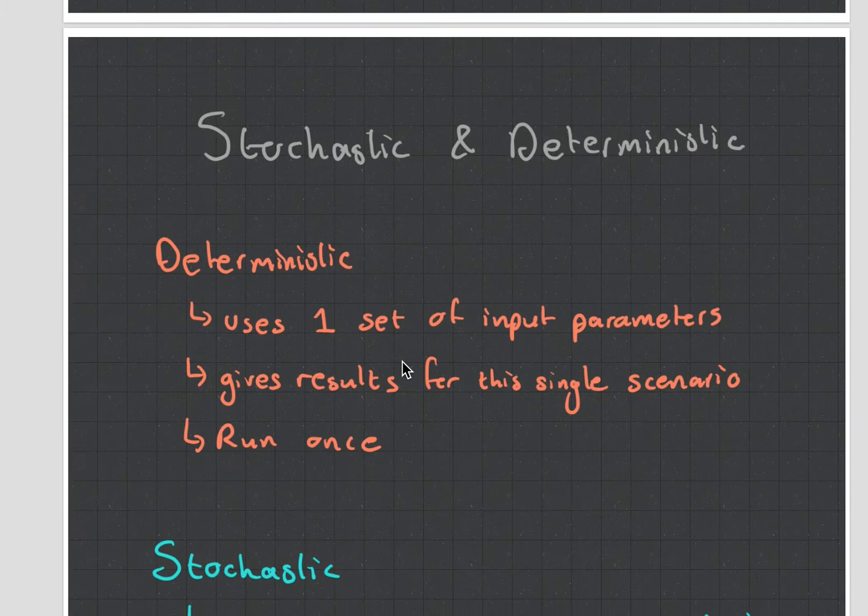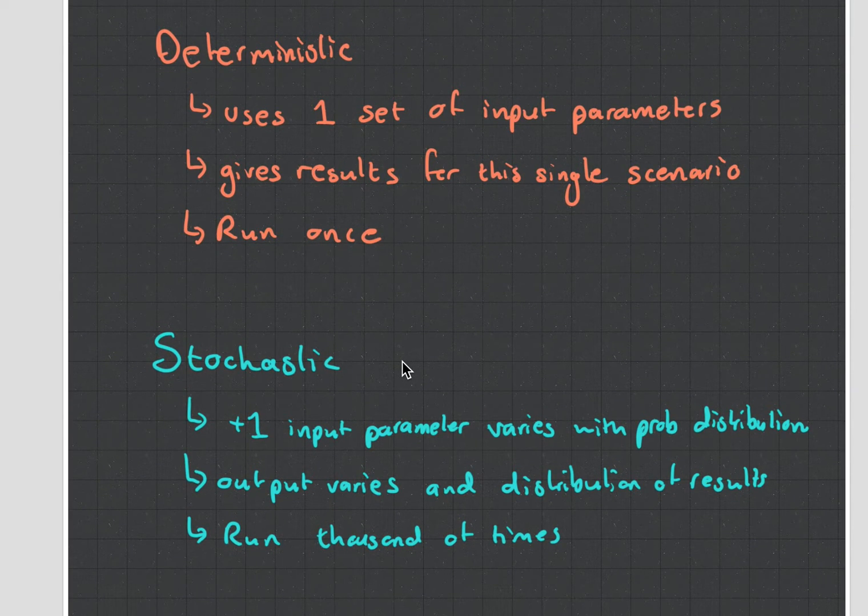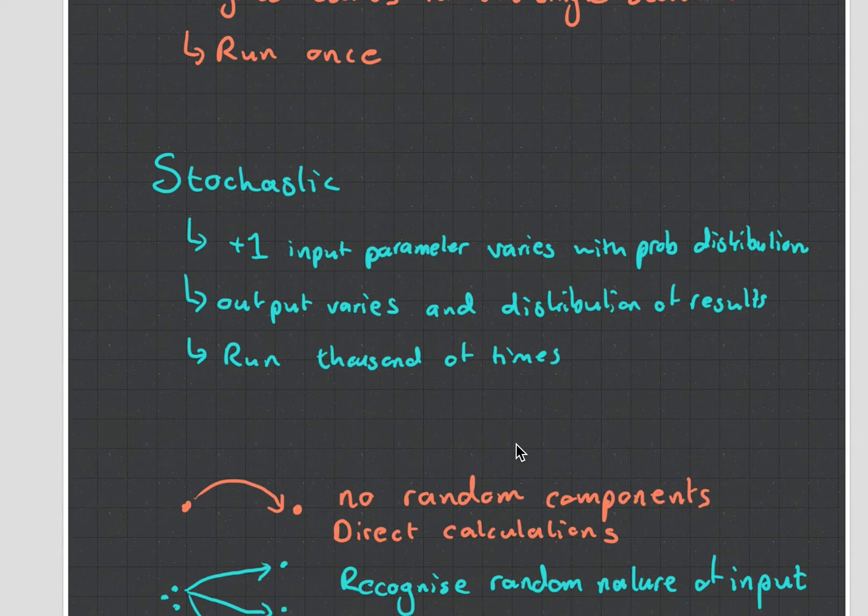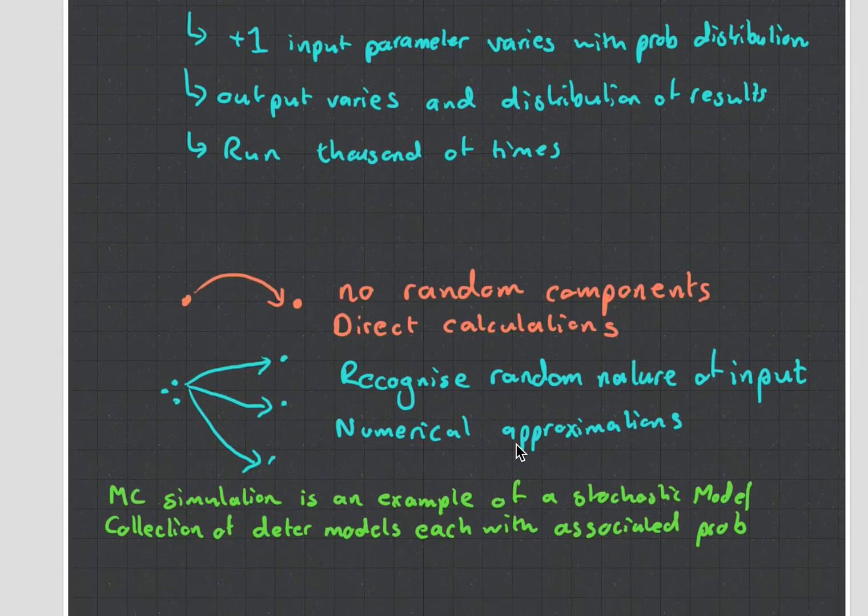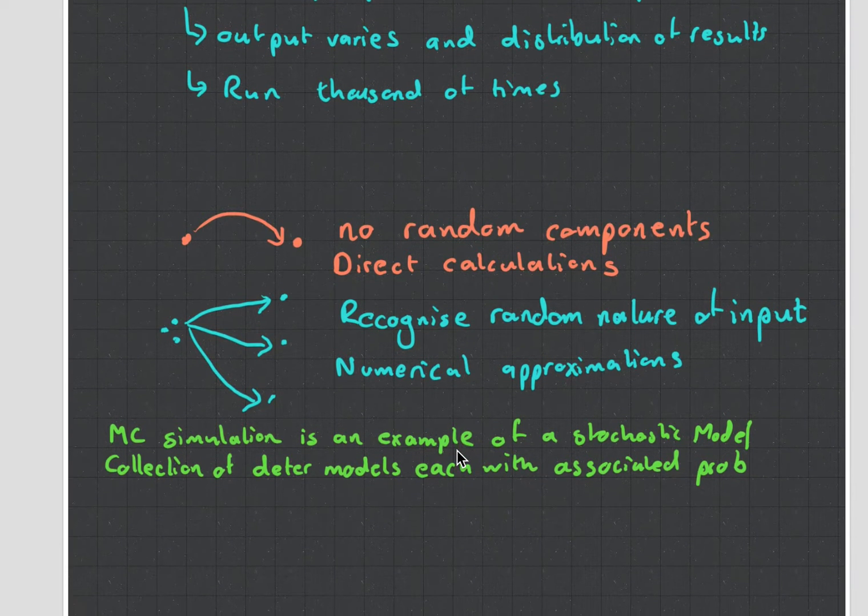Next in the chapter, you're going to learn about the difference between stochastic and deterministic. Essentially, deterministic uses one set of inputs. All the calculations are the same. You run it once, get your output, job done. Stochastic is more complicated because your input parameters may vary with a probability distribution, which means your output will vary and you have to run this many times, up to a thousand times. Your output will be a distribution which you can then analyze. That's why you need CT3 before you can really have a good crack at CT4. Try to do the courses in order of the numbers.